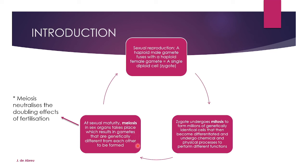When meiosis takes place it makes gametes, and gametes are haploid cells — they have half the number. Haploid plus haploid is half plus half to give you one diploid cell. In that way, meiosis neutralizes the doubling effects of fertilization, because if you had a diploid cell fusing with a diploid cell, you'd have more than 46 chromosomes. The haploid human cell has 23, plus 23 gives you 46. These gametes are genetically different from each other, and then the cycle continues.